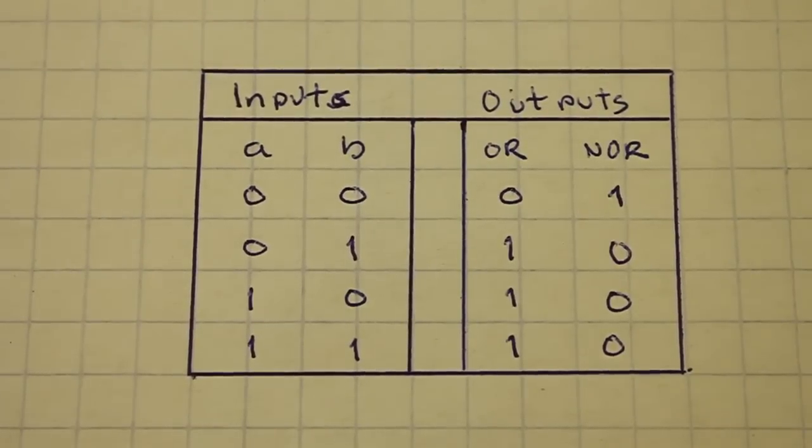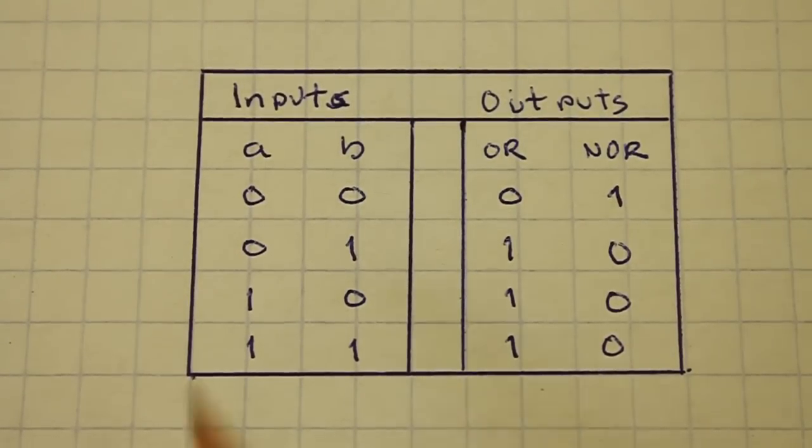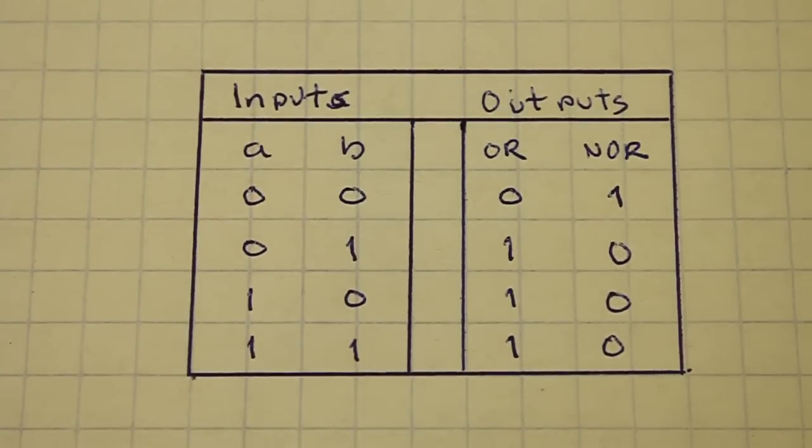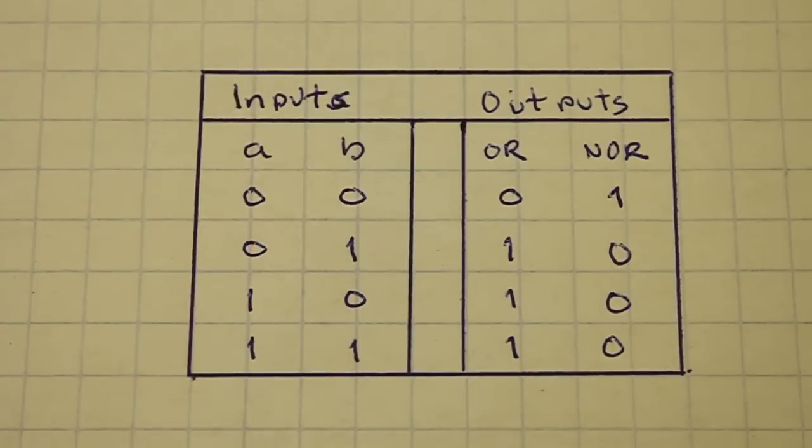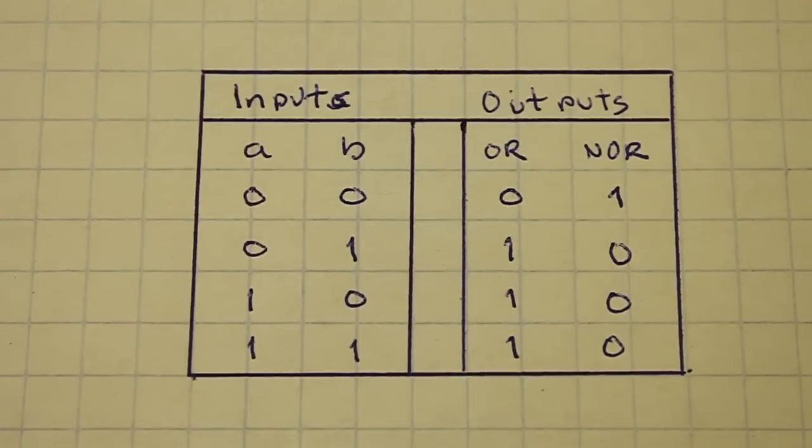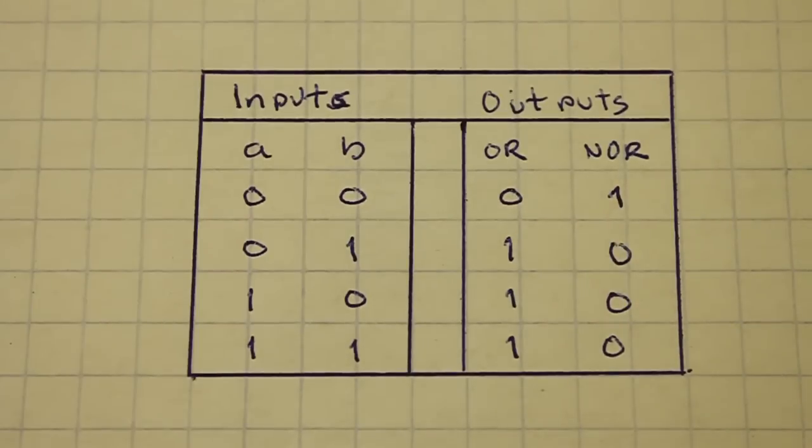Here's the truth table for the OR and NOR gates. We have two inputs A and B which in our circuit are implemented by switches. A zero means the absence of a voltage and the one means the presence of a voltage. In the output also, zero represents no voltage and one represents the presence of voltage.